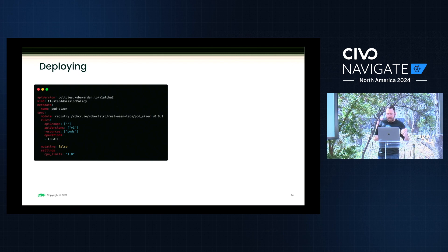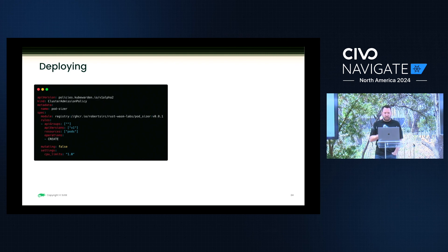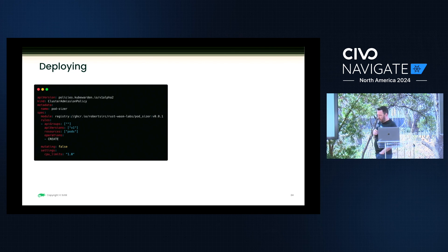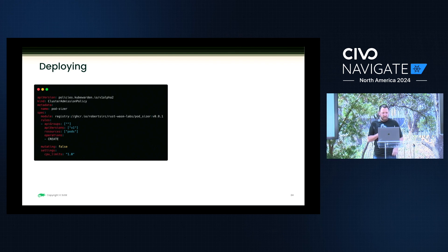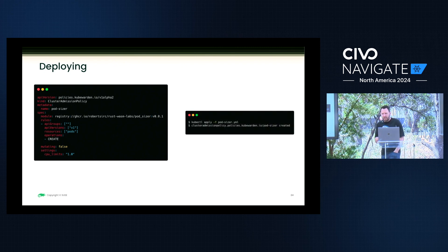For deploying a policy, this is a ClusterAdmissionPolicy pointing to my GitHub registry where I have a policy running. You put the settings in there — I'm setting mutate to false, and there's a CPU limit in the settings file that I want to set. On deployment I'm setting my CPU to one — I don't want you to go above that. Then you do kubectl apply on a YAML file with all that information, and it will tell you the pod-sizer was created.